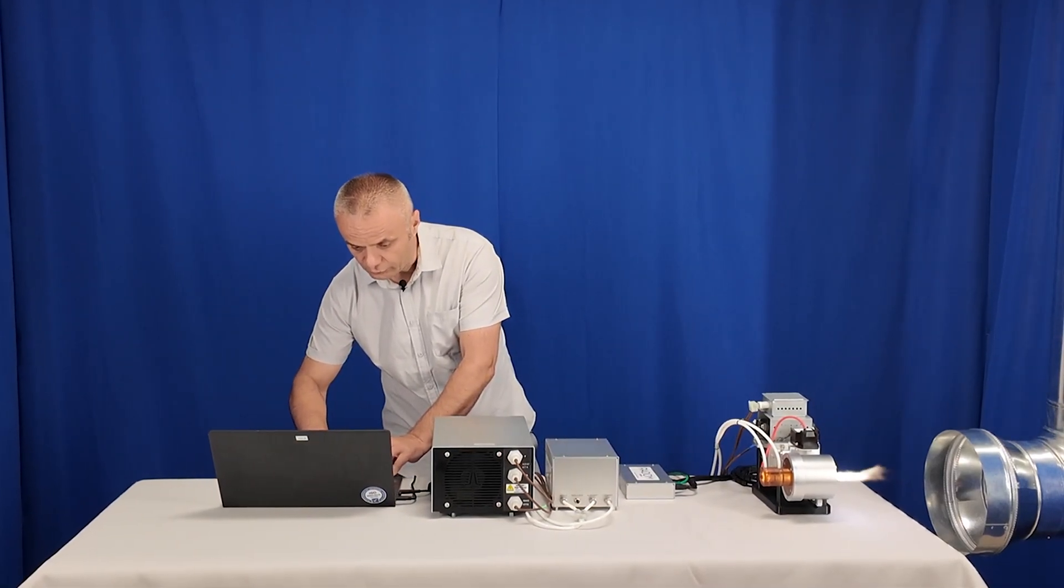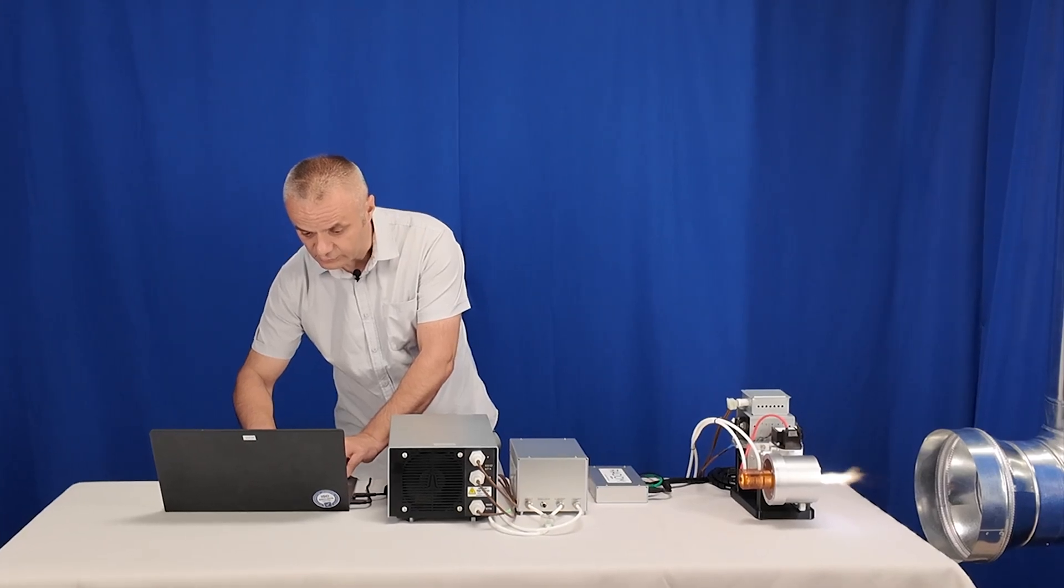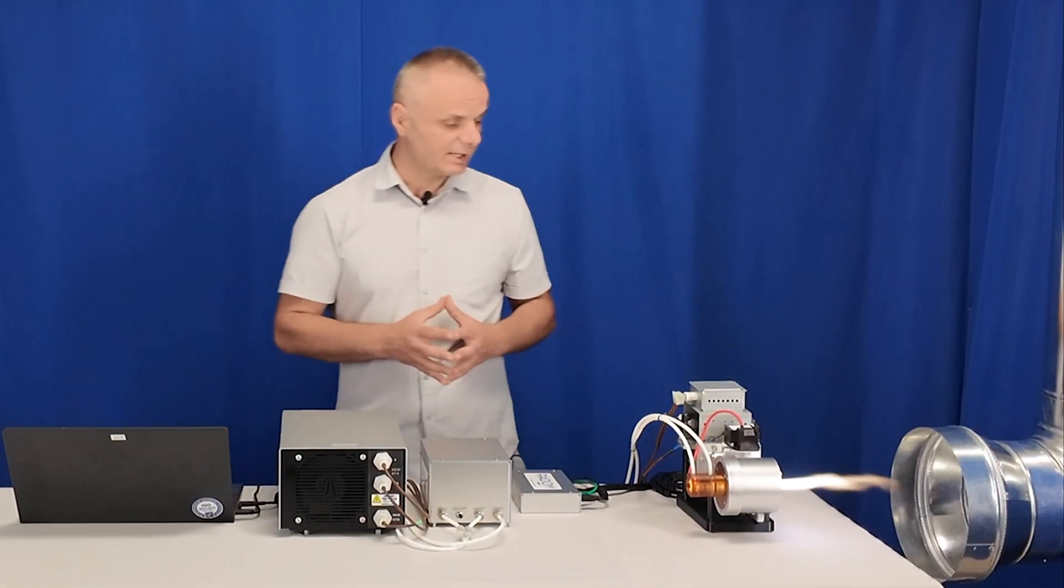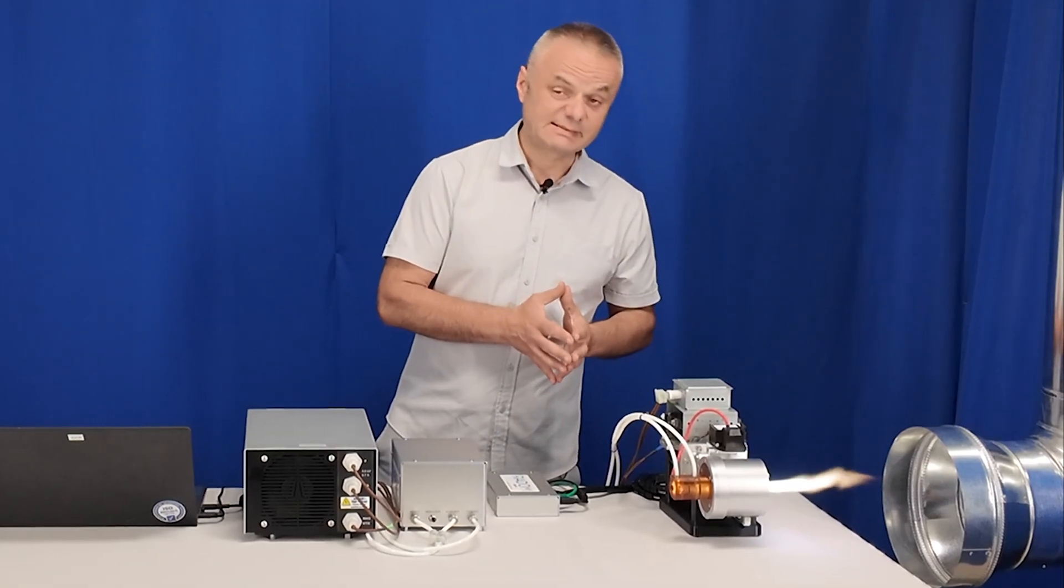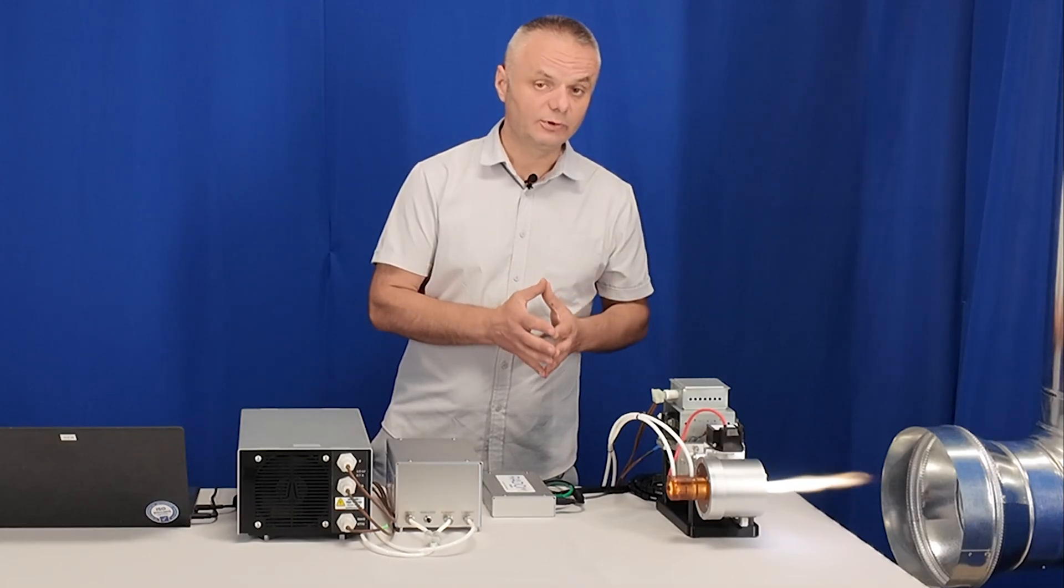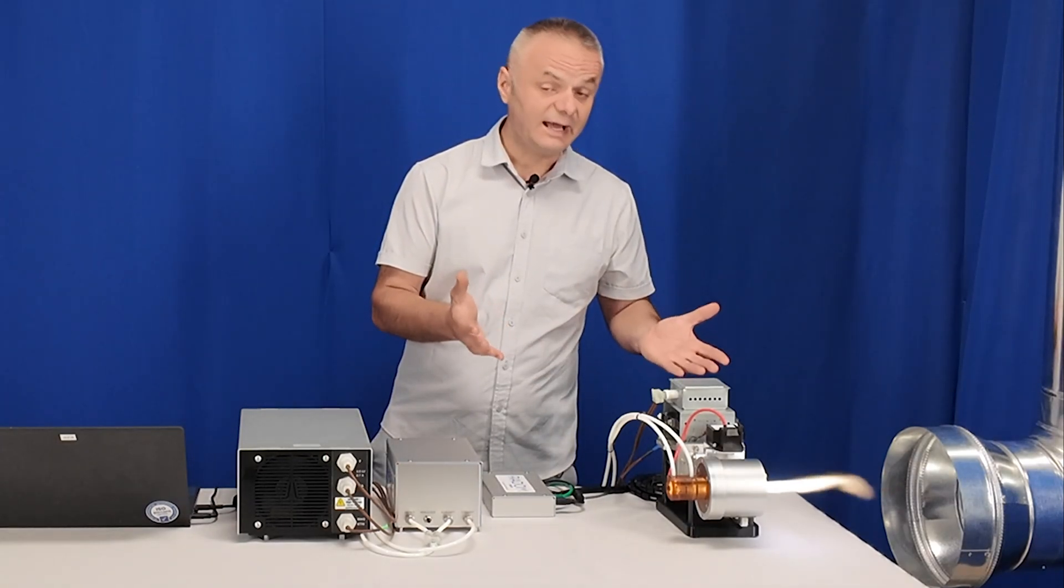I can now go to lower flow rate to, for example, 13 liters per minute. The plasma is now longer because the average temperature of plasma on the output is higher. And the plasma elongates.